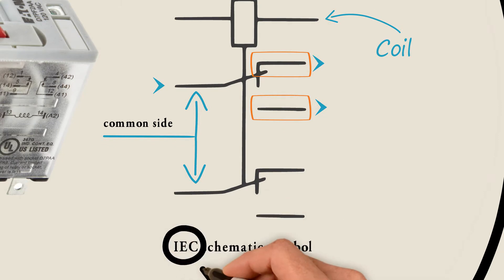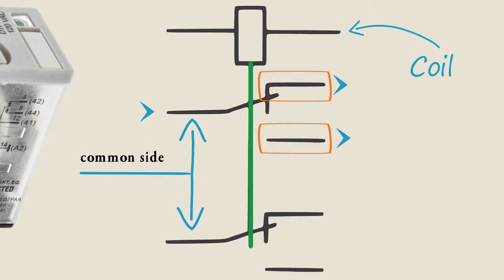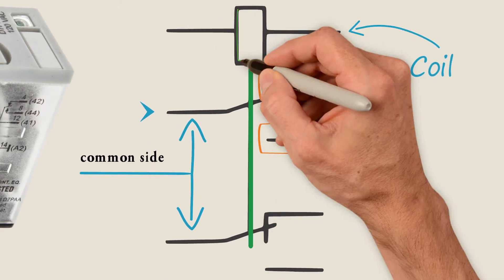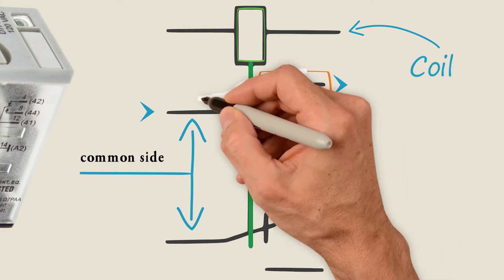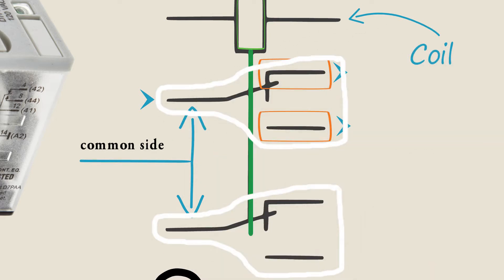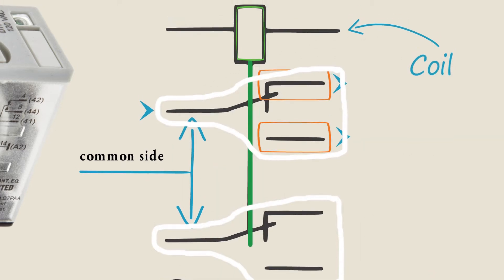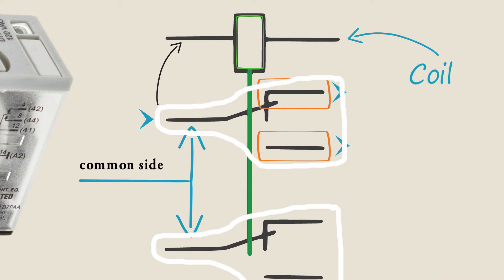The IEC schematic symbol makes it very clear — the switches are controlled by the mechanical arm with the coil. In any case, the switches are isolated from each other, and the switches are isolated from the coil.